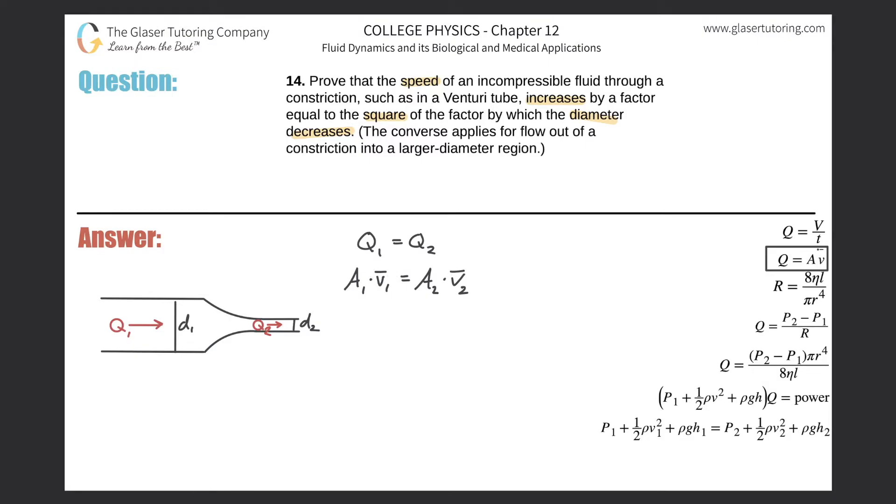So what we have now is it says that we somehow have to prove that the speed increases. So just think about this. If the Qs are the same, that means this side has to equal this side. If the radius, or I should say the area goes down,